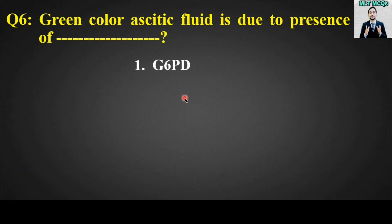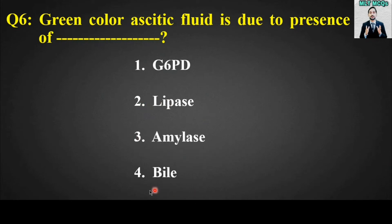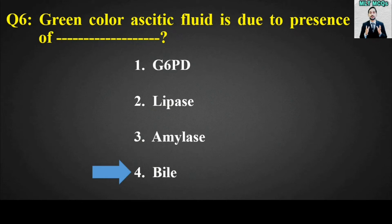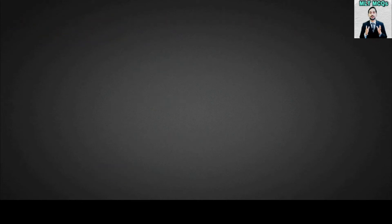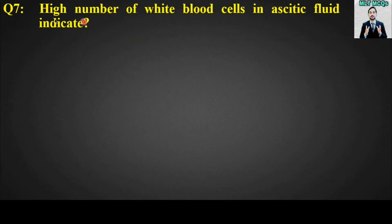Options are: G6PD, lipase, bilirubin, or bile. The right answer for this MCQ is option number four: green color ascitic fluid is due to presence of bile. MCQ number seven is: high number of white blood cells in ascitic fluid indicate — options are: